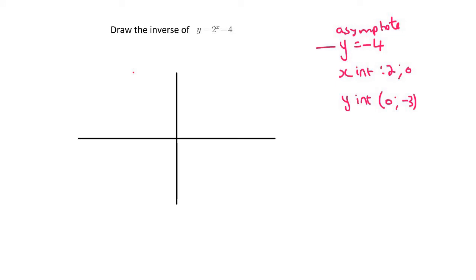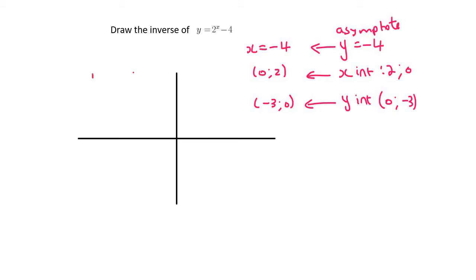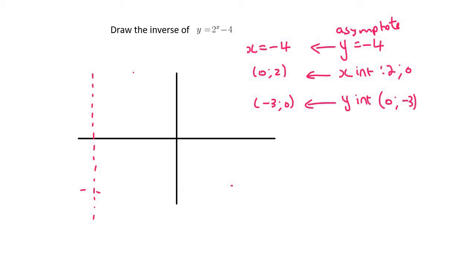All that you do is flip all of this around. So y equals negative 4 becomes x equals negative 4. This point over here becomes (0, 2), and then this point becomes (-3, 0). x equals negative 4 is a dotted line — it's an asymptote. That makes sense, because in the original graph it was horizontal, and in this graph it will now be vertical, because everything flips around.